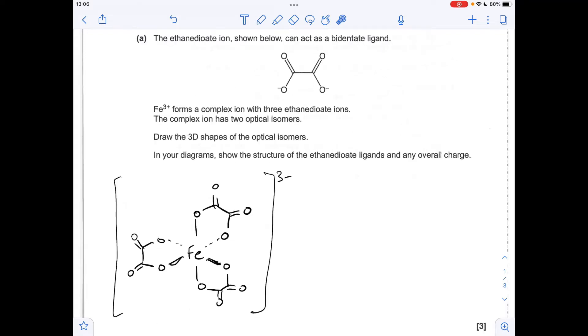Next thing I need to do is draw the mirror image of this. So I'll start with my empty octahedron. And all I need to do now is mirror the position of the ligands onto the right-hand octahedron. So we'll start on the right-hand side here. So we've got this ligand here, and then the other one there, and then this one down here. Obviously this has got 3 minus charge as well.